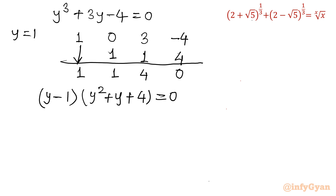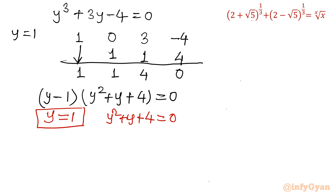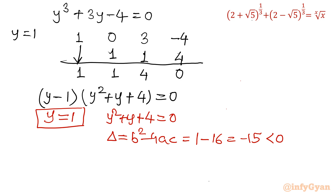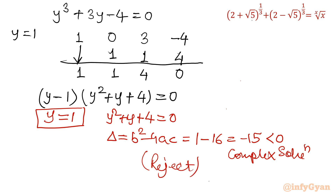Either y − 1 = 0 or y² + y + 4 = 0. For the quadratic y² + y + 4, the discriminant is b² − 4ac = 1 − 16 = −15, which is negative, giving complex/imaginary solutions. Since x is real, y must also be real, so we reject this quadratic. The only real solution is y = 1.